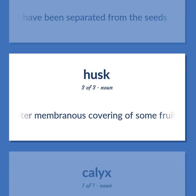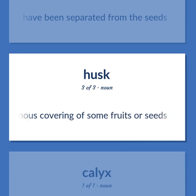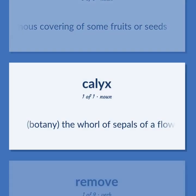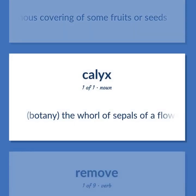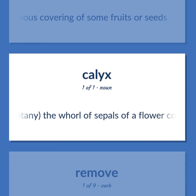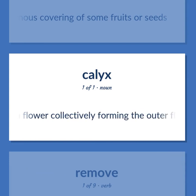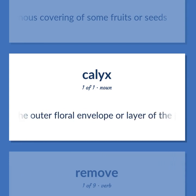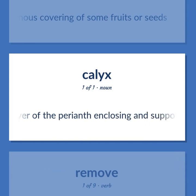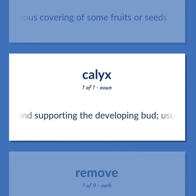Husk: Outer membranous covering of some fruits or seeds. Also in botany, the whorl of sepals of a flower collectively forming the outer floral envelope or layer of the perianth, enclosing and supporting the developing bud — usually green.